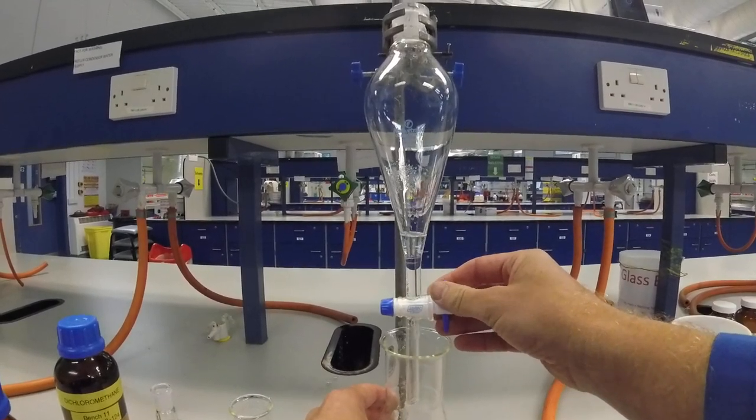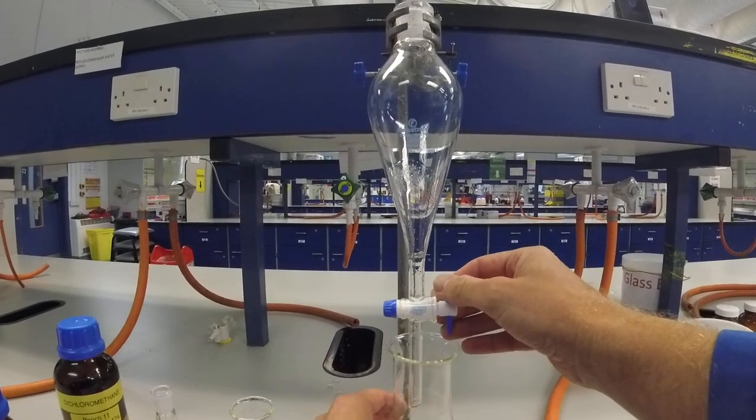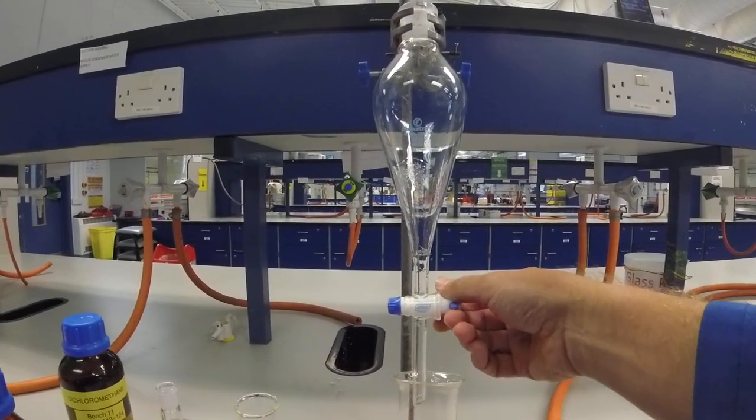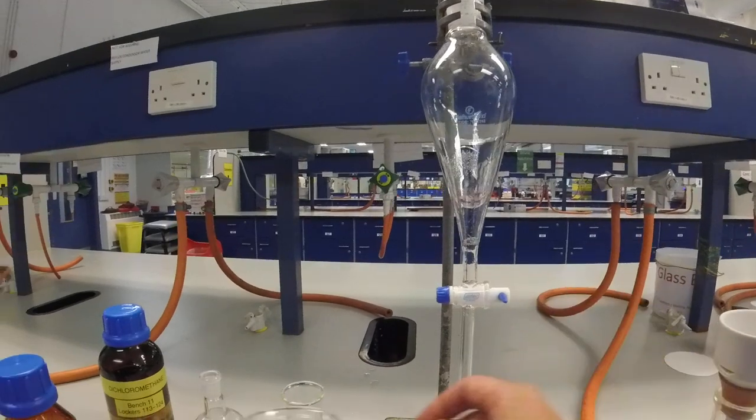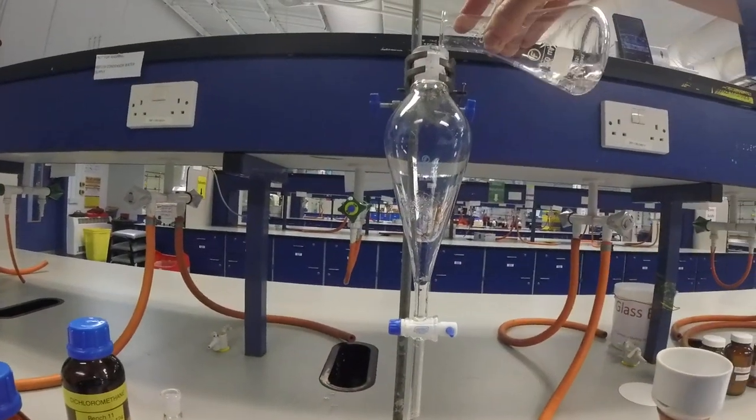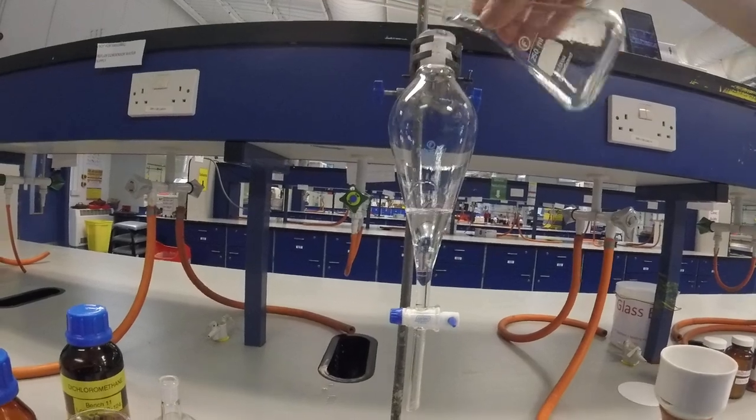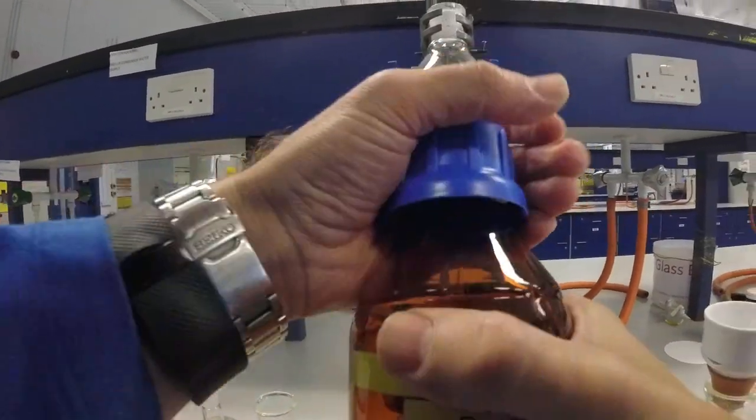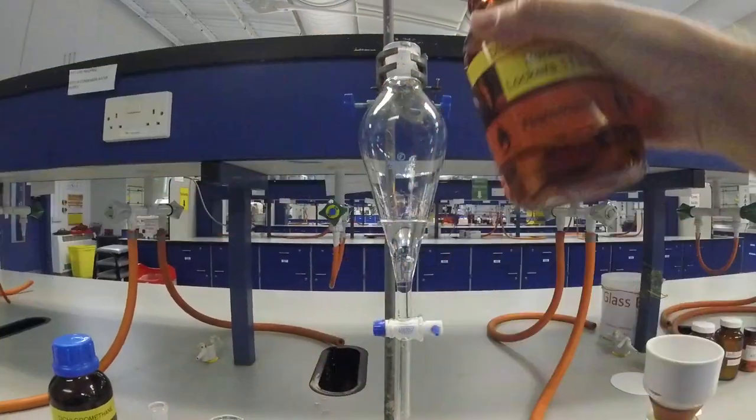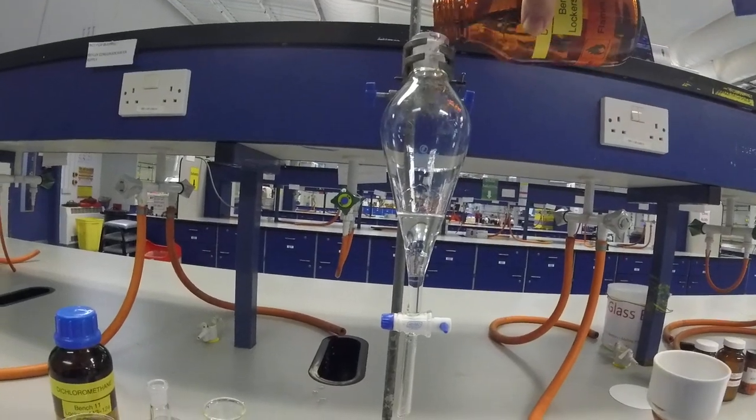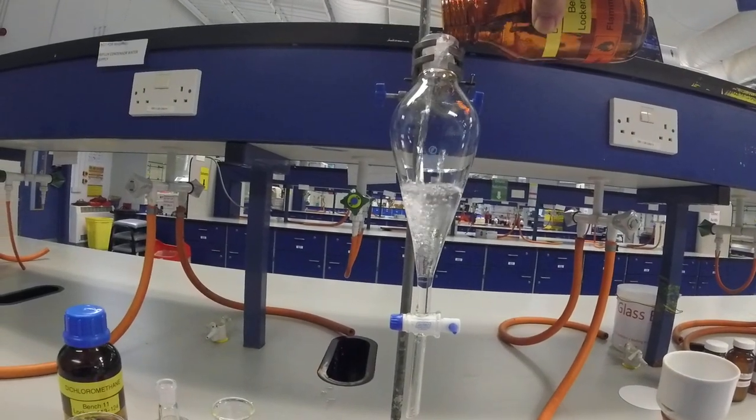And sometimes some of our product will still be mixed in the water layer as well. So what we'll do is we put the water layer back in. Take some fresh solvent. So in this case we're using ether. But it might be ethyl acetate or dichloromethane.